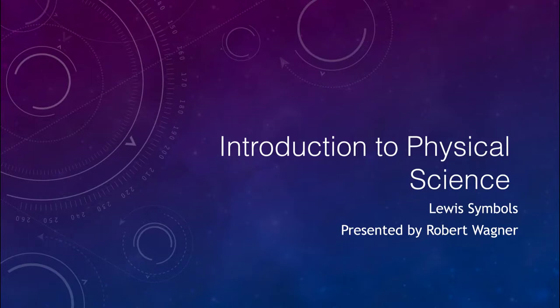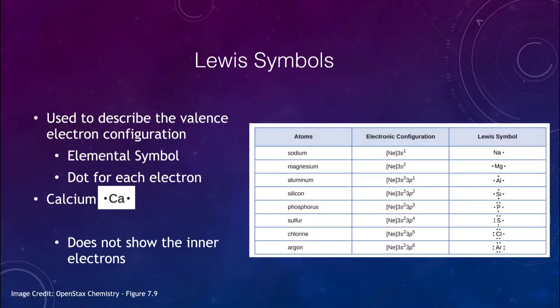Greetings and welcome to the introduction to physical science. In this lecture, we are going to look at Lewis symbols — a way of figuring out and looking at valence electrons and showing how they can combine together, whether it be a single bond, a double, or even a triple bond. First of all, what is a Lewis symbol? It is a way of describing the valence electron configuration.